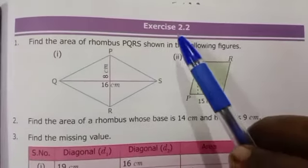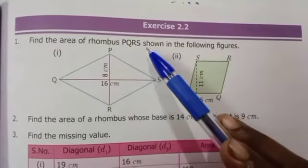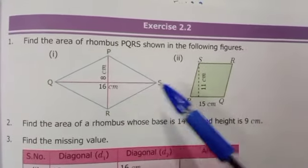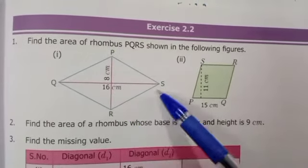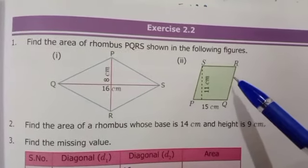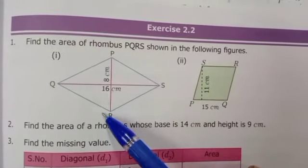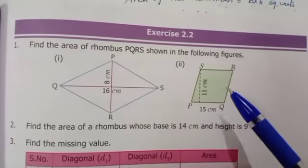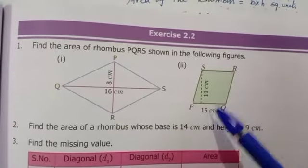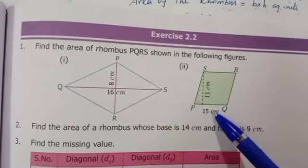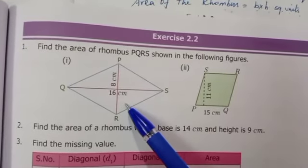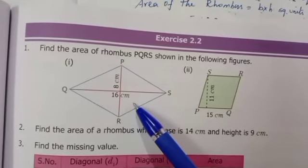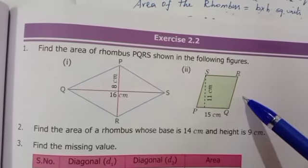Students, exercise 2.2. First problem: find the area of rhombus PQRS shown in the following figures. Two diagrams are given — both are rhombus. For the first diagram, d1 and d2 are given, so use the first formula: half into d1 into d2. For the second problem, base and height are given, so use the second formula: b into h square units.